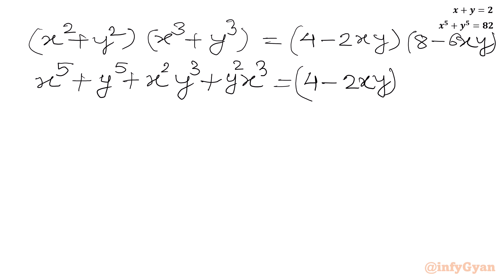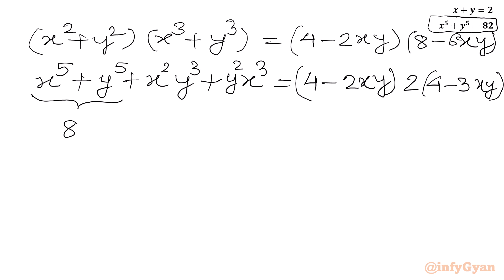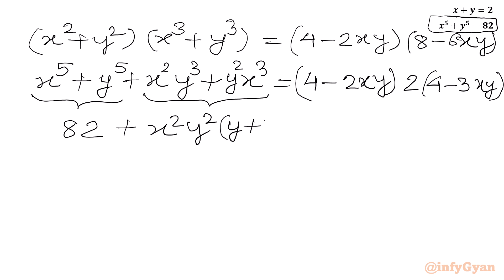On the left-hand side, if I expand x squared plus y squared times x cubed plus y cubed, and take 2 common from the right-hand side bracket, we get 4 minus 3xy. Now x to the power 5 plus y to the power 5, as per equation number 2, we can write 82, and from the remaining two terms we can take x squared y squared common, giving y plus x in the bracket.